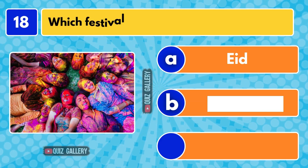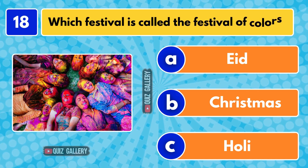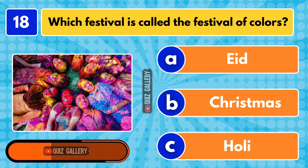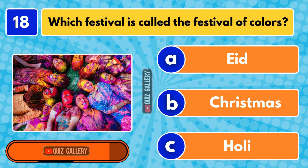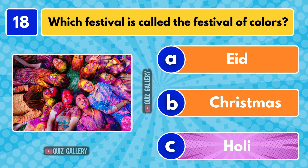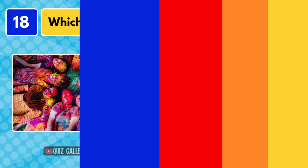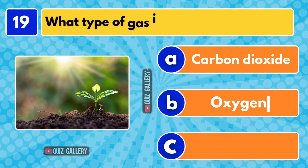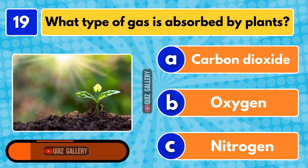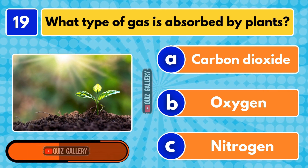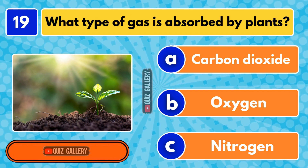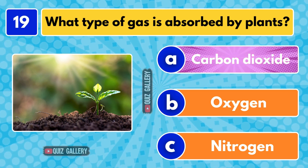Which festival is called the festival of colors? Holi festival. What type of gas is absorbed by plants? Carbon dioxide.